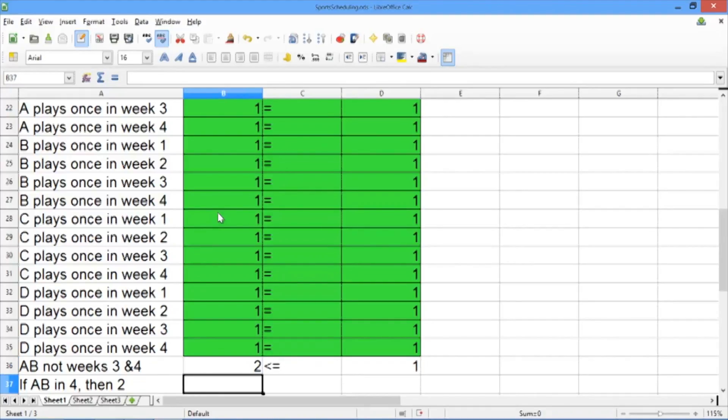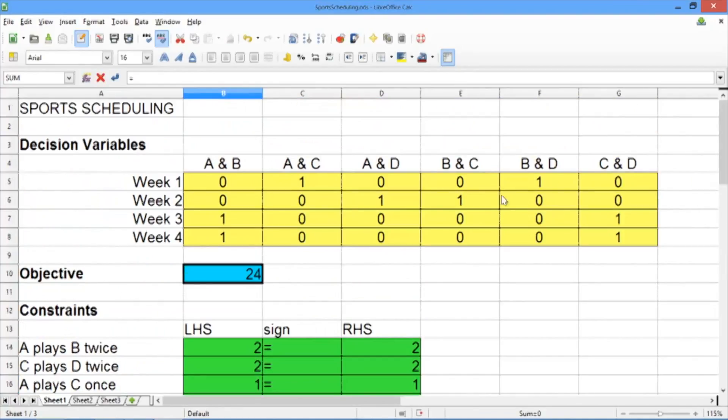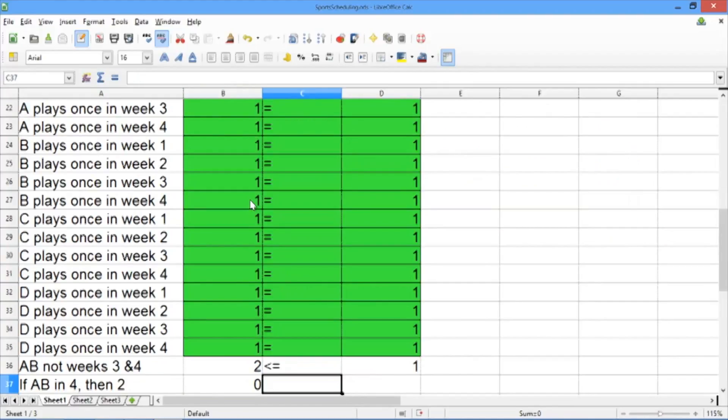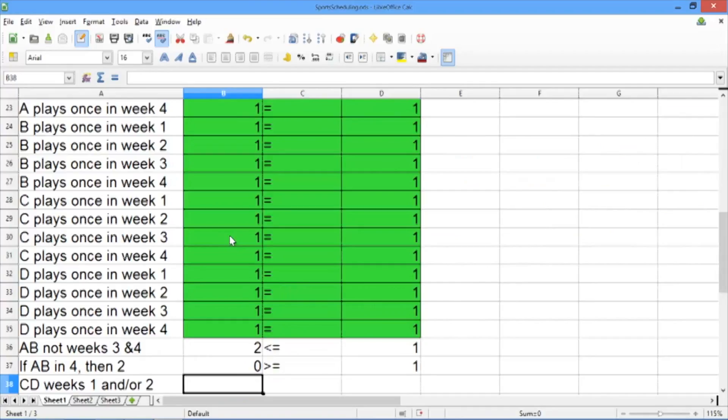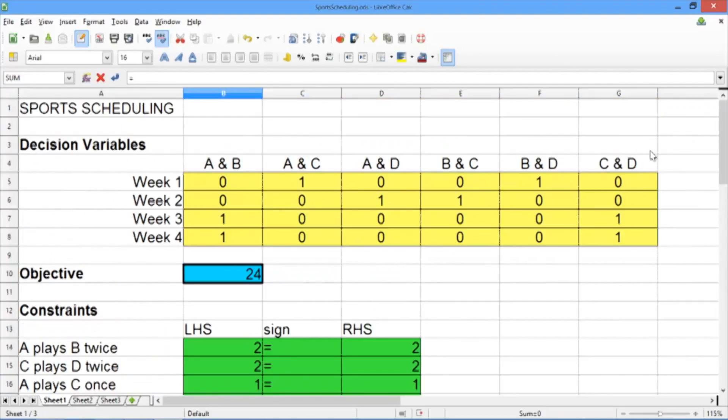Our second constraint, the left-hand side is equal to the decision variable for teams A and B in week 4. For our third constraint, the left-hand side is equal to the decision variables for teams A and B in week 4.